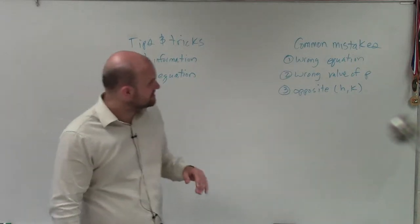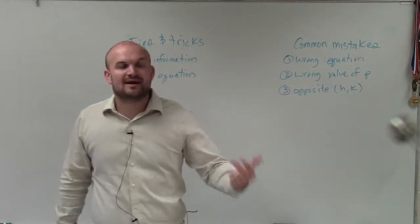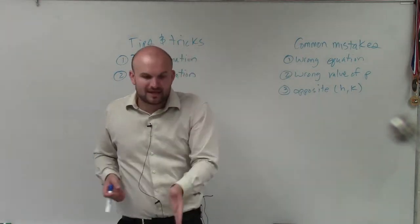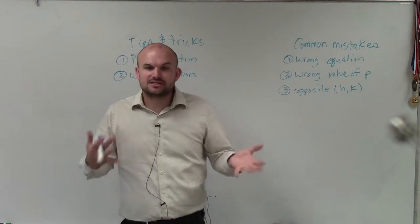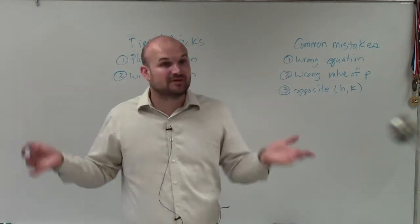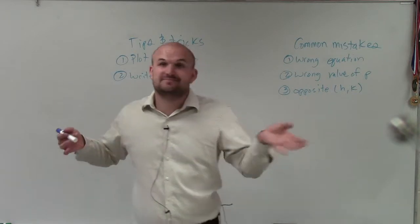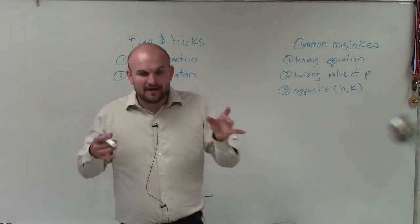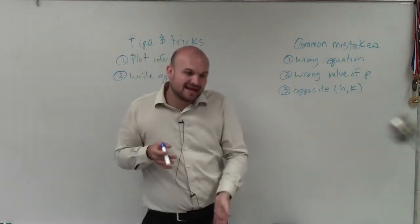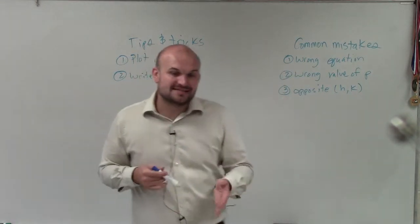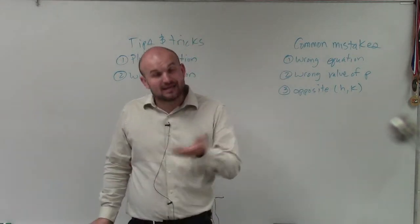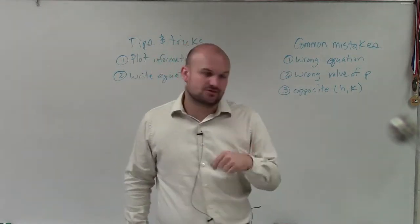Now let's get into some common mistakes. First one, number one, is writing down the wrong equation. Just remember, ladies and gentlemen, when you have a vertical axis of symmetry, that's just like the quadratics you've always been dealing with: y equals ax squared plus bx plus c, or y equals a times x minus h squared plus k. It's the same equation. So anytime you have that vertical axis of symmetry, you know that your x is going to be squared. Anytime you have the horizontal axis of symmetry, you know your y is going to be squared.